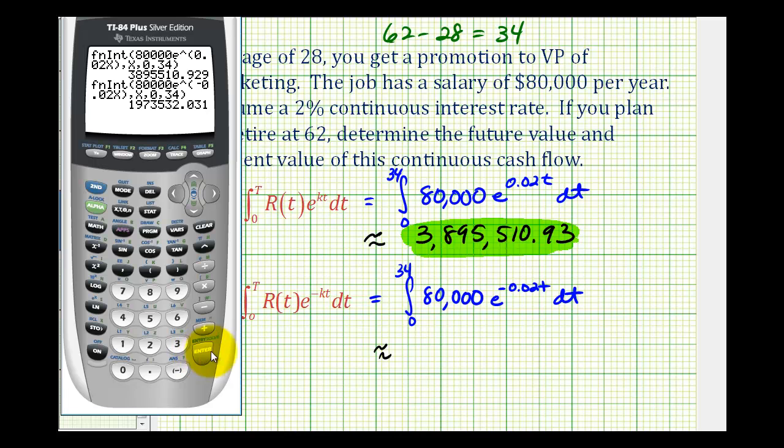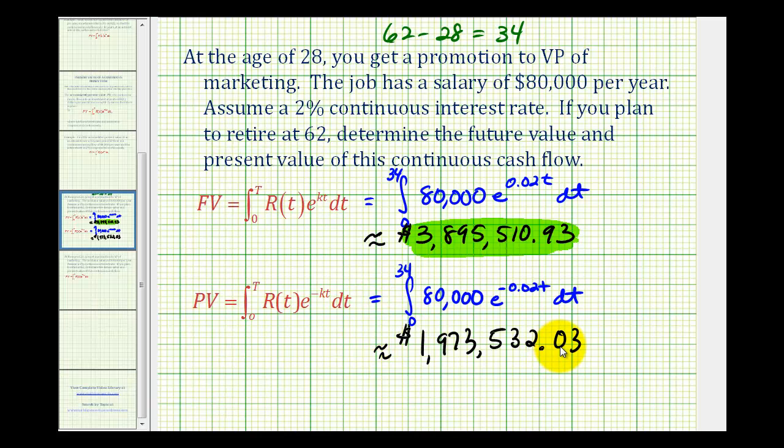And now we can just press enter, and the present value of this continuous cash flow is $1,973,532.03. This value represents the one-time deposit we'd have to make today in the same type of account to have the same balance as the future value at the age of 62.